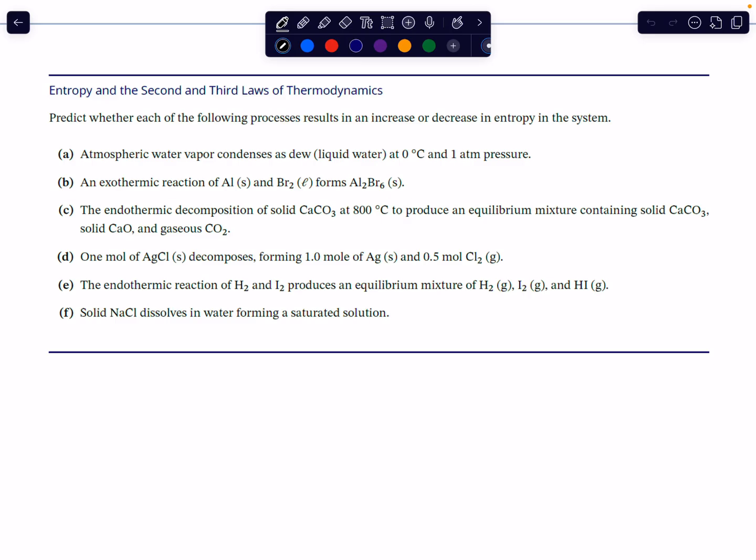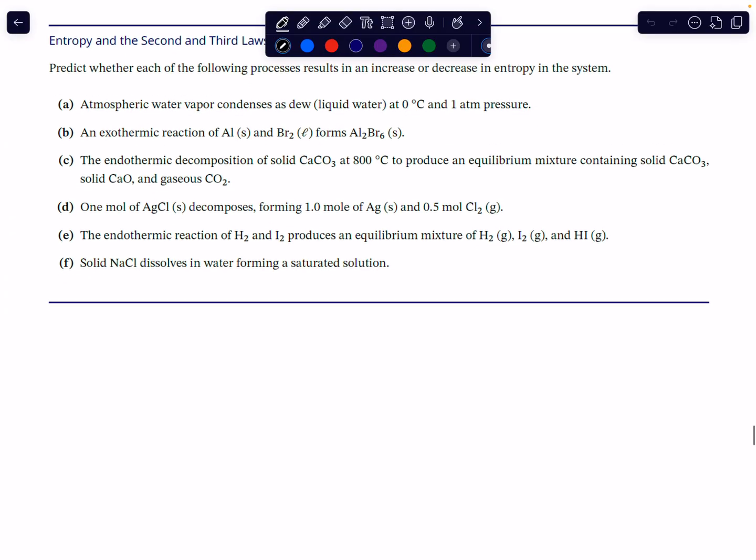Hello, everyone. In this example, I want to look at predicting whether or not the entropy of various systems is going to either increase or decrease, and the different factors that you need to consider in making such a prediction. I have a couple of processes that we need to look at, so let's just dive into them.